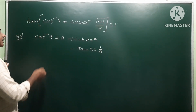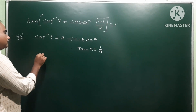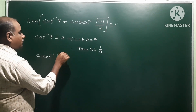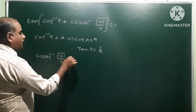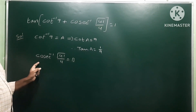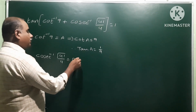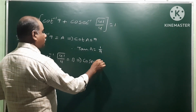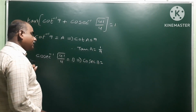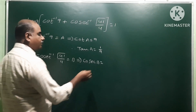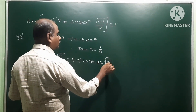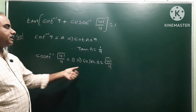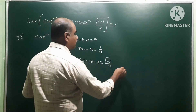Next, take cosec⁻¹(√41/4) as b. So the second function applied on b gives us cosec(b) = √41/4. From this we have to find the value of tan(b) using a right angle triangle.